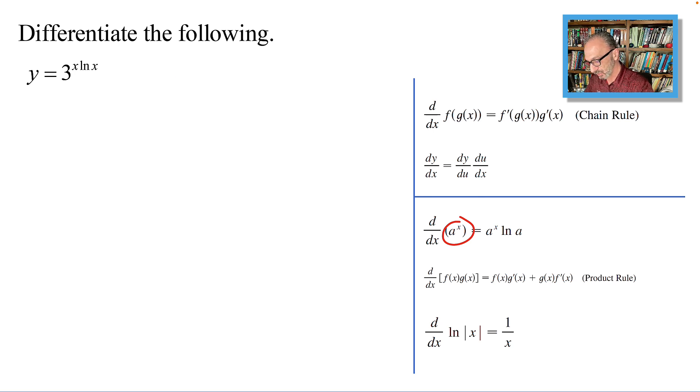So dy/dx, or y prime in short, will be 3 to the power x ln x, as a to the x times ln a. In this case, a is 3, and that is ln 3. Because of the chain rule, we need to keep going and find the derivative of u, which is d/dx of x ln x.